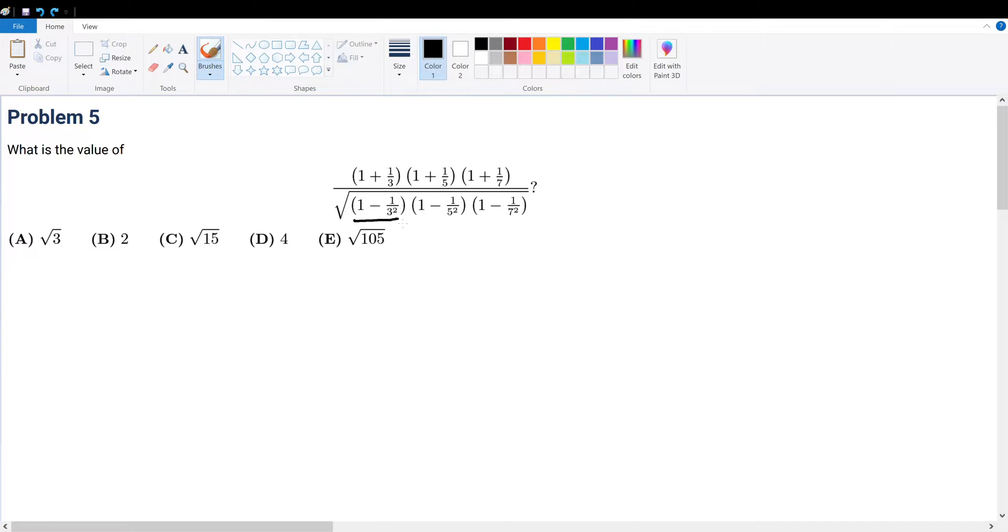1 minus 1 over 3 squared, 1 plus 1 over 3, 1 minus 1 over 5 squared, 1 plus 1 over 5. There's a pattern here, and the pattern here is that this is all perfect squares, because we know that 1 is just 1 squared.